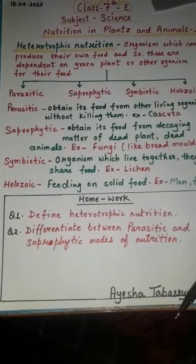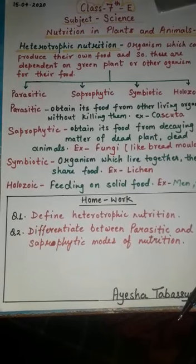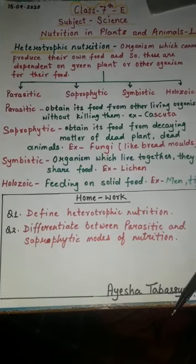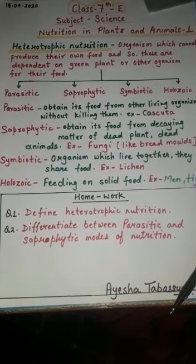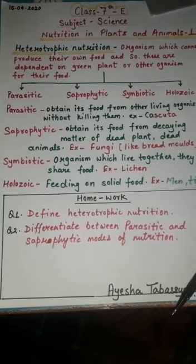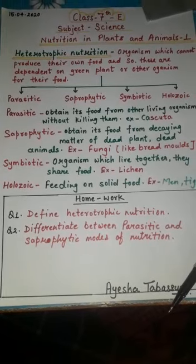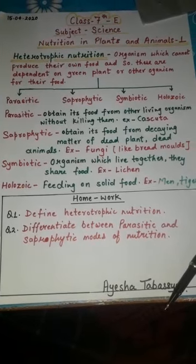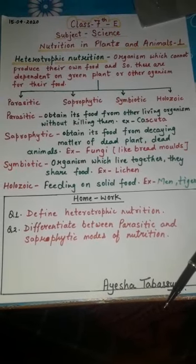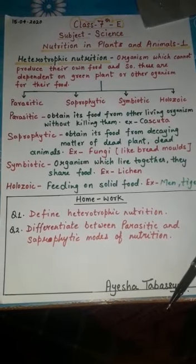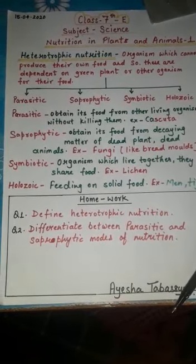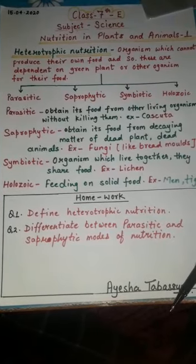Second is carnivores. Animals which eat the flesh of other animals are called carnivores. For example, lion, tiger, leopard, etc.